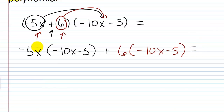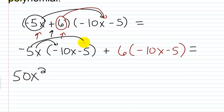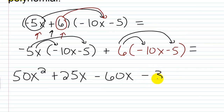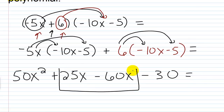So let's use our distributive property. Negative 5x times negative 10x would be positive 50x squared. Then negative 5x times negative 5 is plus 25x. Then we have 6 times negative 10x — that's minus 60x. Then 6 times negative 5 is minus 30. Now we're not done because we have 25x and negative 60x, which are like terms, so we can combine those.